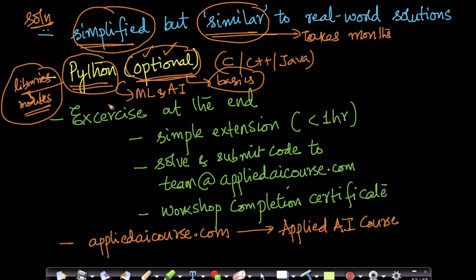At the end of this workshop, we have an exercise for all workshop participants. In this exercise, we solve a simple extension—a simple problem which is an extension to the solutions and algorithms we learn in this workshop. Anybody who has gone through the whole workshop should be able to solve this exercise in one hour. Typically, most workshop participants solve this exercise within one hour. I strongly recommend you finish this exercise and submit the code to team@appliedaicourse.com.